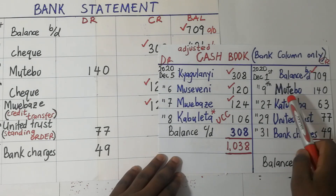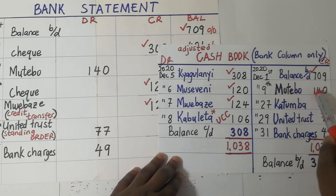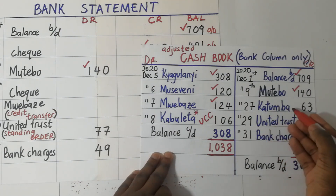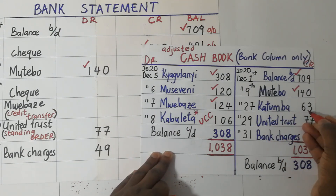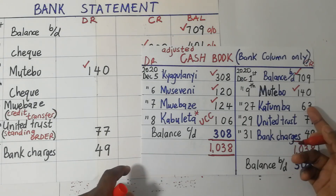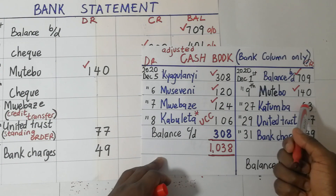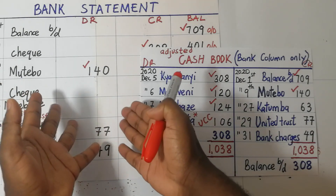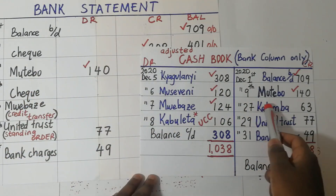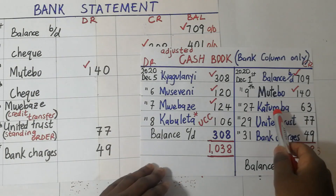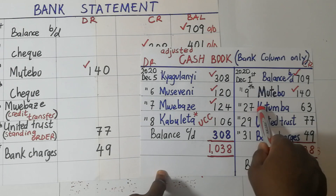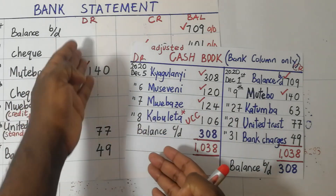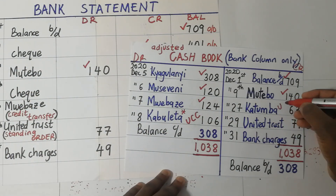Then we come to the checks we issued. We issued a check to Mwebaze 140 and when we issued it, he presented it and our bank was debited. We issued a check to Katumba 63 shillings, and Katumba has not yet presented the check to the bank so that his money is deducted from our bank account. Because Katumba's money is not reflected in the bank statement, Katumba has not yet presented the check. So because Katumba has not yet presented the check to our bank so that our bank account is debited, we call this an unpresented check.